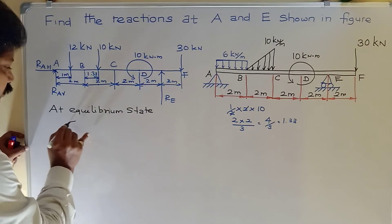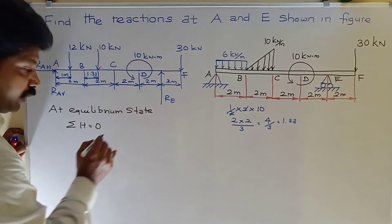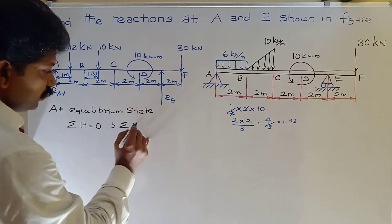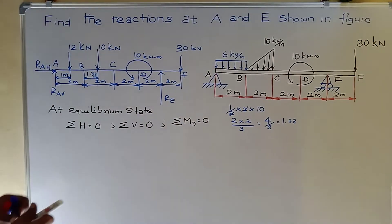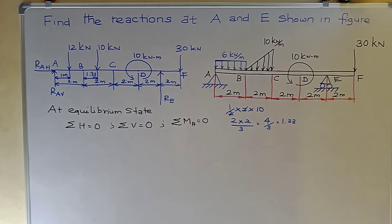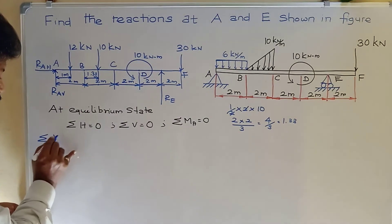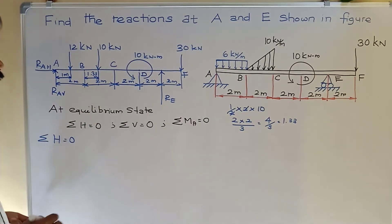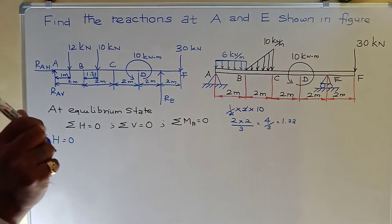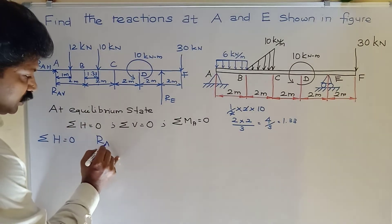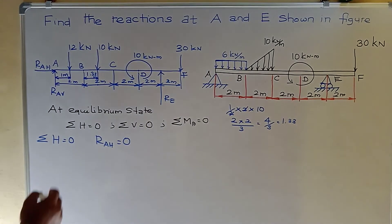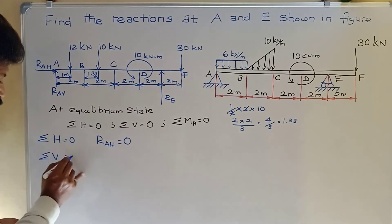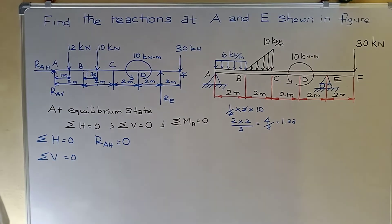Now apply the equilibrium conditions. First condition, Sigma H = 0: the only horizontal force is RAH, so RAH = 0. Second condition, Sigma V = 0: the vertical forces are RAV upward, minus 12 kN, minus 10 kN, plus RE, minus 30 kN = 0.